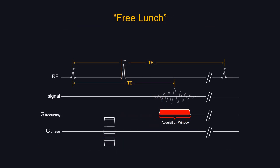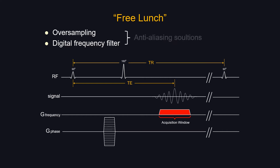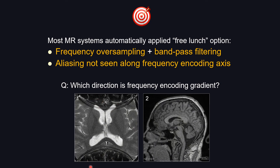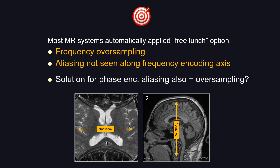Think of frequency encoding as a free lunch — there's no time penalty, so you can oversample the entire specimen and crop out what you don't want, or use a digital frequency filter to filter out signal outside the desirable area. This anti-aliasing is already built into clinical MRI. So on a board exam, if you see wraparound artifact, you know it's in the direction of phase encoding. On image number two, the wraparound is left to right — that's the phase encoding direction — so frequency encoding is 90 degrees to that, in the SI direction.